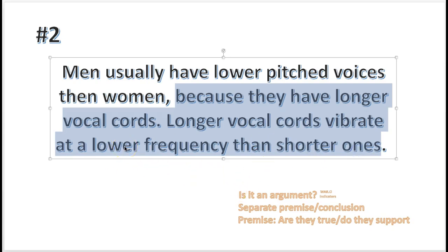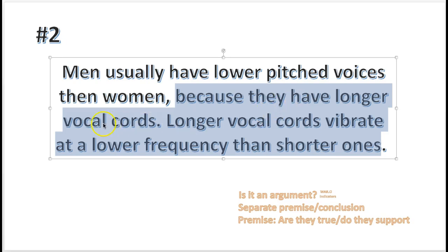Now we separate the premise from the conclusion. The conclusion is: men usually have lower pitched voices than women. And the premises — the evidence to support that — is because they have longer vocal chords. Now the next step: zero in on these premises. Are these premises true, and do they support the conclusion? Let's see — they have longer vocal chords. Do men have longer vocal chords? How can we determine if that is true?